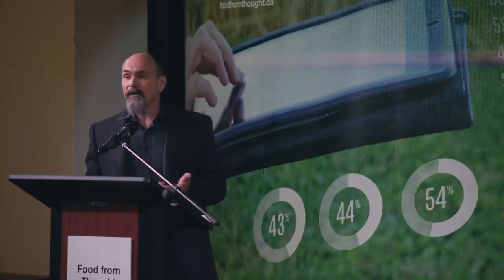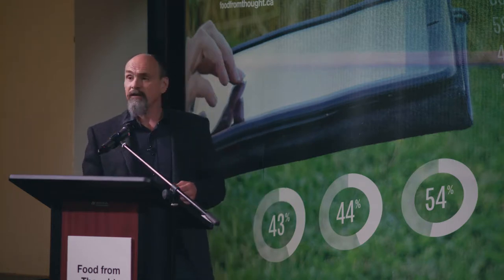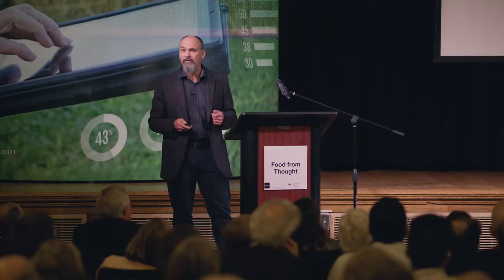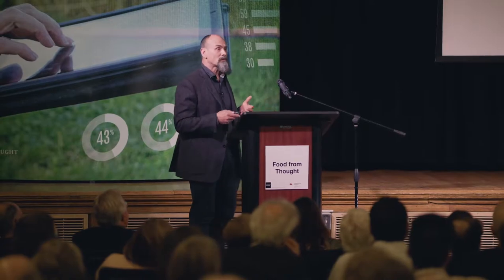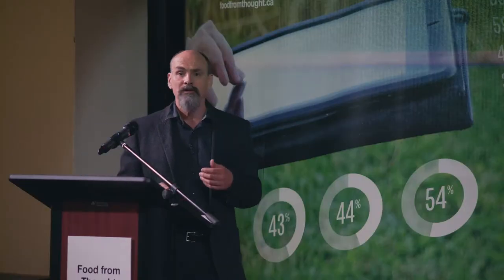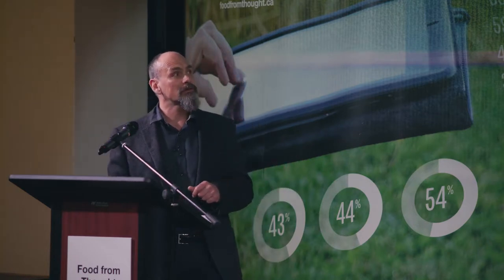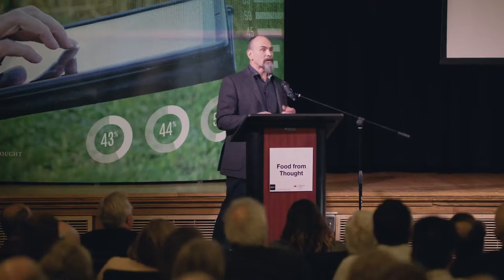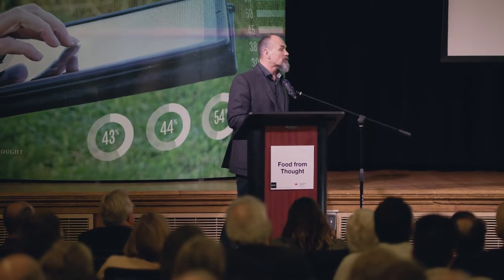As Lord Robert May once said, without taxonomy to give shape to the bricks and systematics to tell us how to put them together, the house of biological sciences would be a meaningless jumble. Taxonomy and systematics are really fundamental disciplines to understanding biodiversity, but we practice them in ways that harken back to the era of Linnaeus and Darwin — looking at differences in shape, size, behavior, and geographic range as a proxy to identify species.